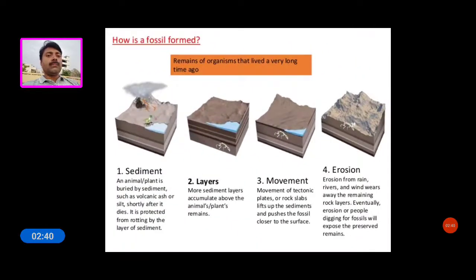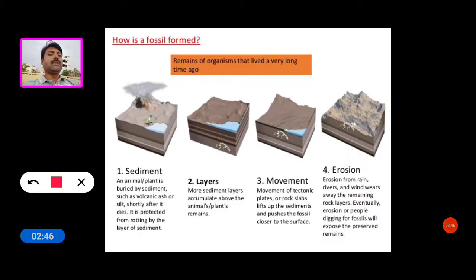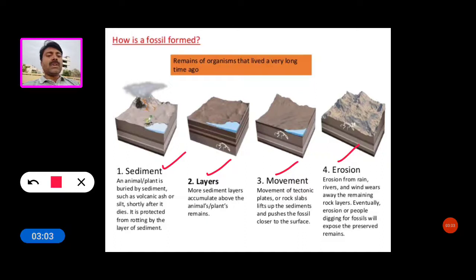How are fossils formed? There are four types of fossil formation. The first one is sediment, the second is layers, the third is movement, and the fourth is erosion.